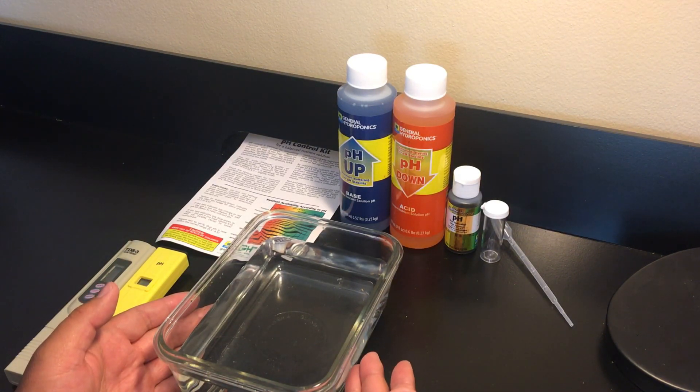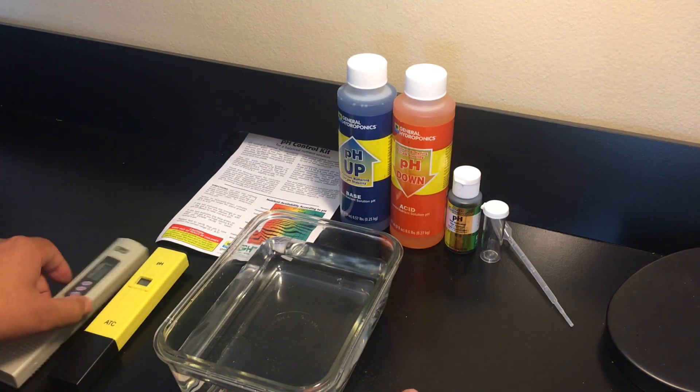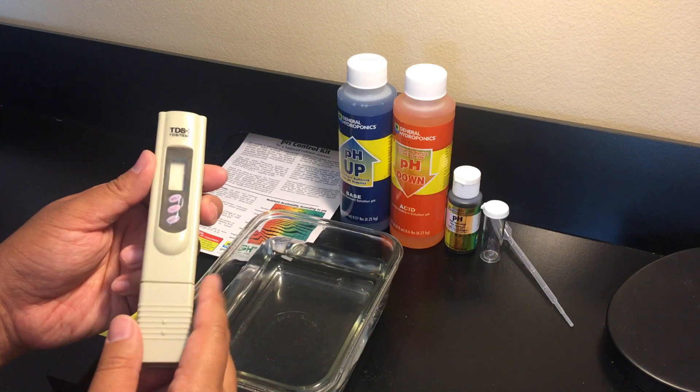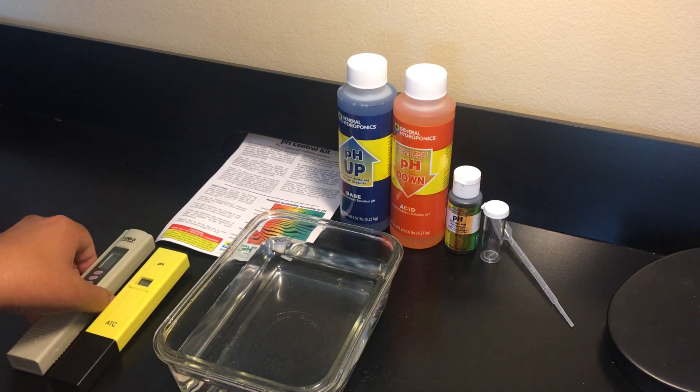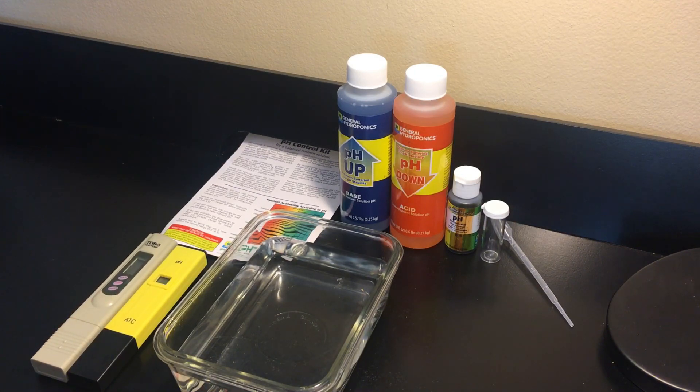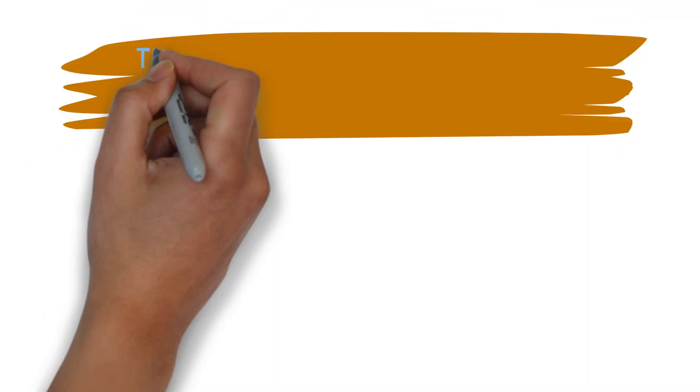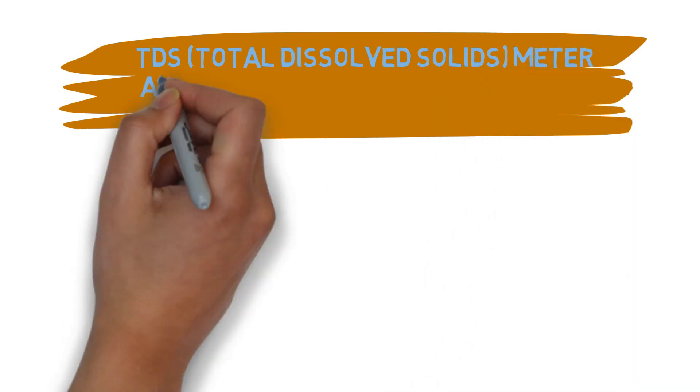A TDS meter or total dissolved solids meter is also known as a parts per million meter or a nutrient tester because that's exactly what it does. It shows the overall water quality by showing how many parts per million in the water is filled with solids.